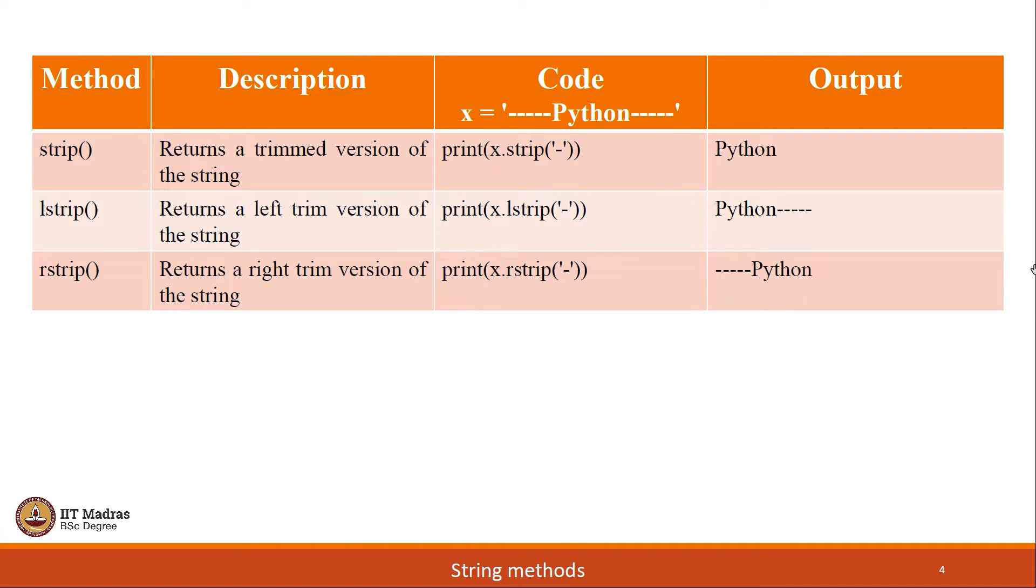The same strip function can be split into two different variations. First is lstrip which stands for leftstrip. It removes a specific character from the left side of the string and the second one is rstrip stands for rightstrip. It removes that specific character from the right of the string. Now, I leave it up to you to find out what happens if that specific character appears somewhere in between the original string, whether it will get removed or not.